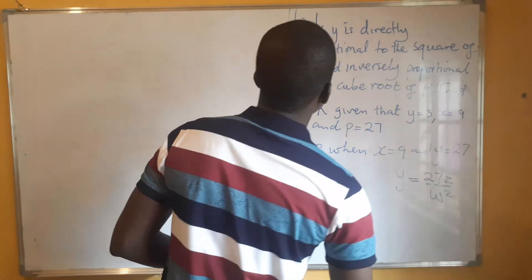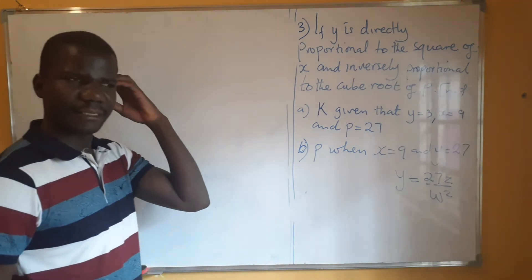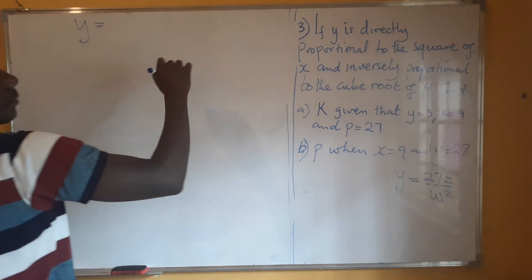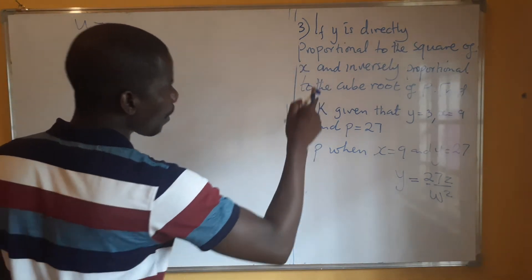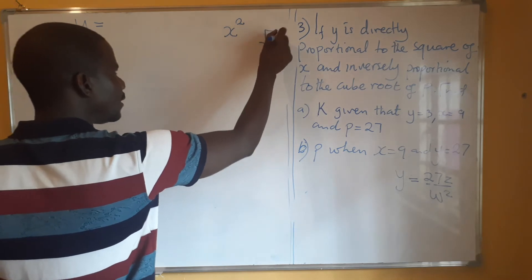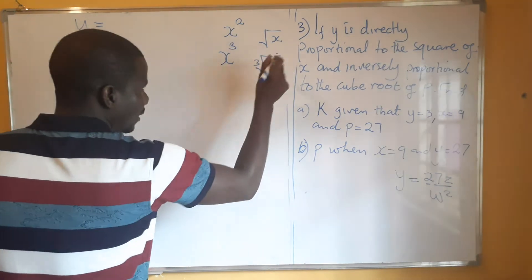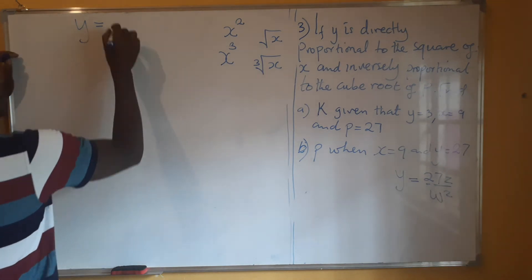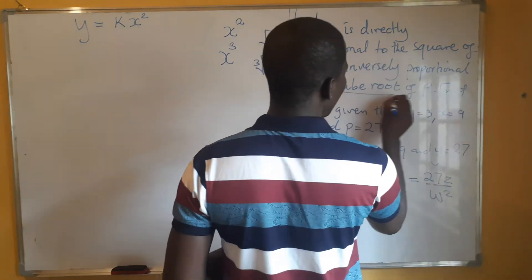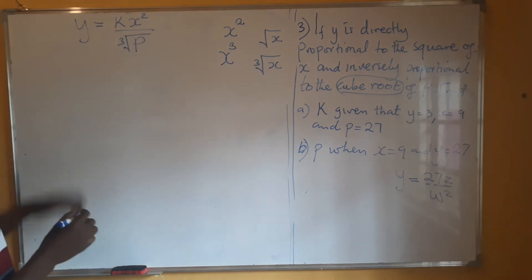Let's come to the last question. Y varies or is directly proportional to the square of X — please take note, this is the square root, and this one is the cube root. Y varies directly as the square of X and inversely proportional to the cube root of P. The cube root of P is this one. So this is how we are going to write the equation.